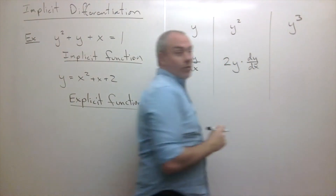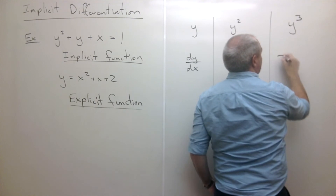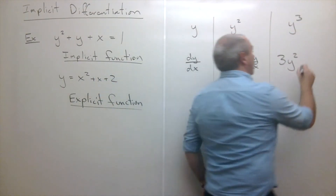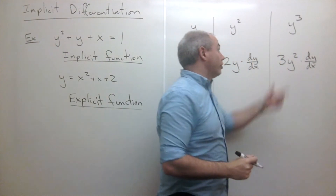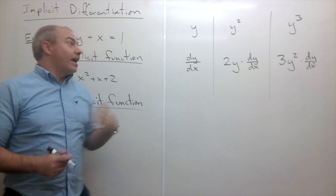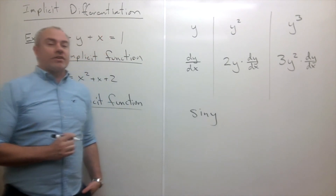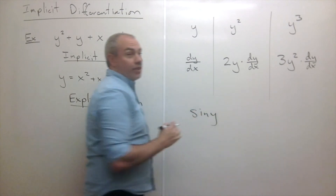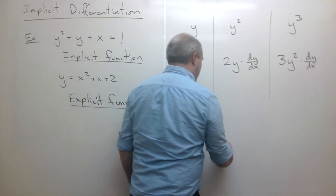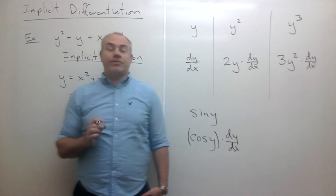Let's do the same for y cubed. The derivative of y cubed is three y squared, and then I multiply by the derivative of the inside function y, giving dy/dx. Similarly, the derivative of sine of y: the derivative of sine of something is cosine of that something — so we get cosine of y — then multiply by dy/dx.